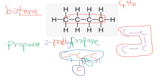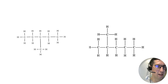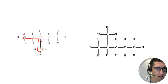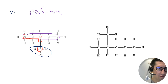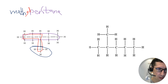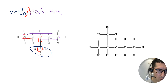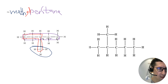Let's look at a situation where the numbering is straightforward. Find the longest chain — that's five carbons, so pentane. The side group has one carbon, so it's a methyl group: methylpentane. Numbering from either end gives carbon three for the methyl group, so this is 3-methylpentane.